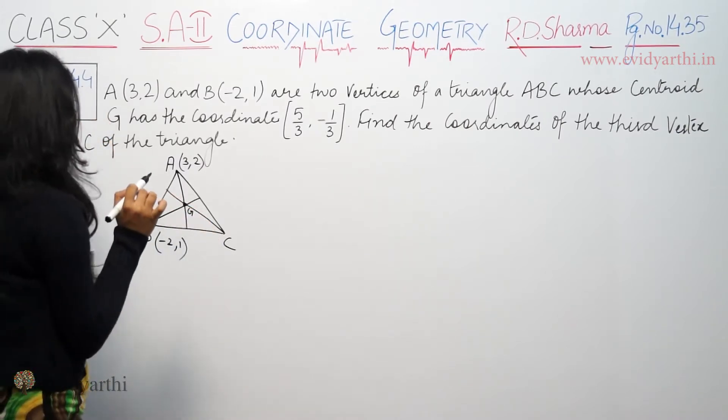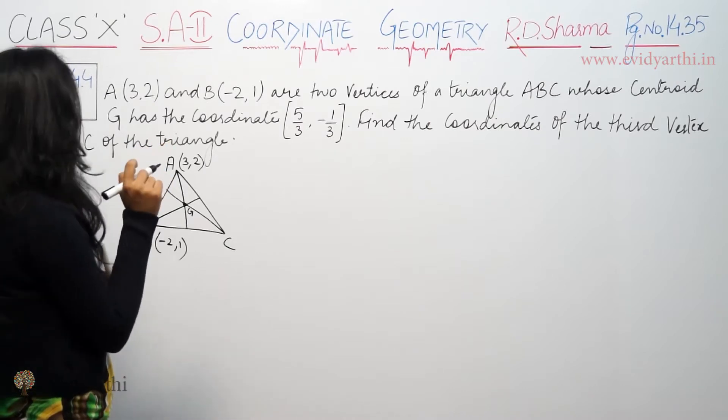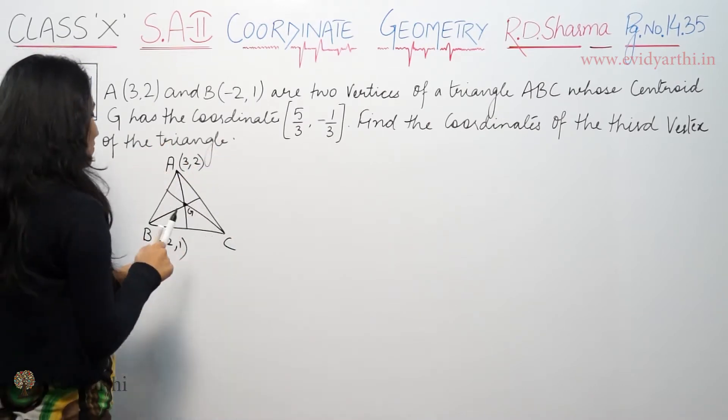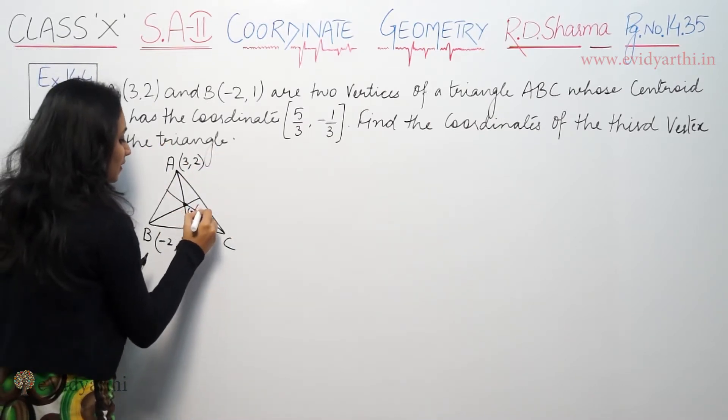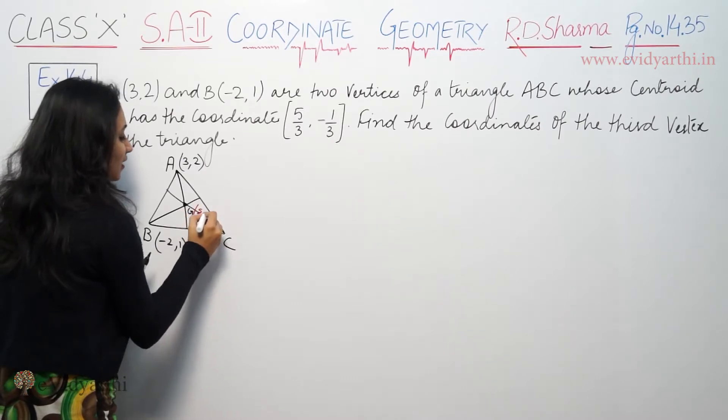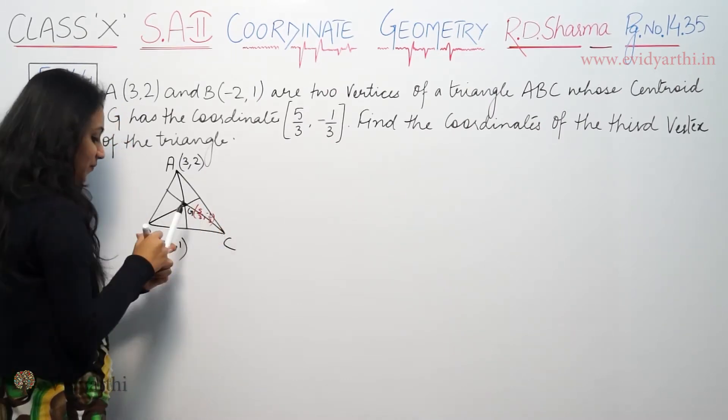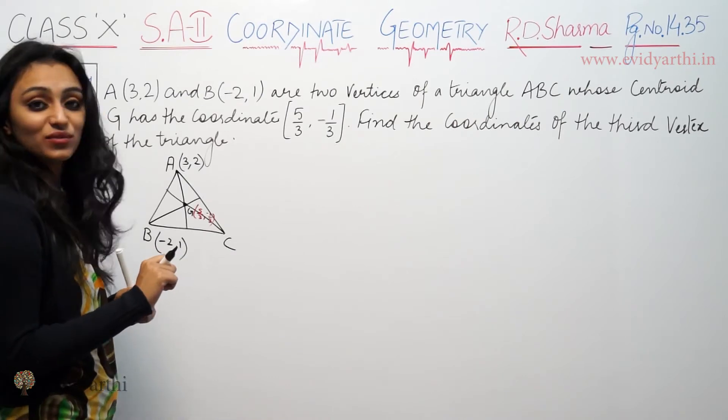Let's see what is G of the triangle. G has the coordinates - now we see coordinates given: 5 by 3, minus 1 by 3. Find the coordinates of the third vertex.